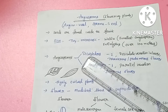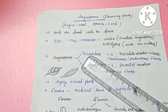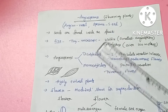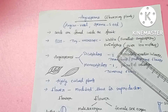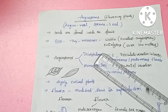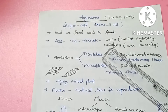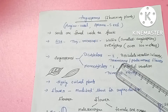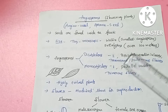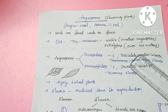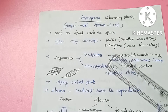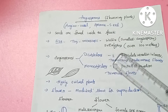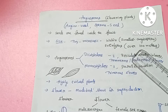In this video, we will talk about angiosperms. For example, the smallest angiosperm is Wolffia — it is in microscopic form. Plants can also grow over 100 meters; for example, eucalyptus is nearly 100 meters.